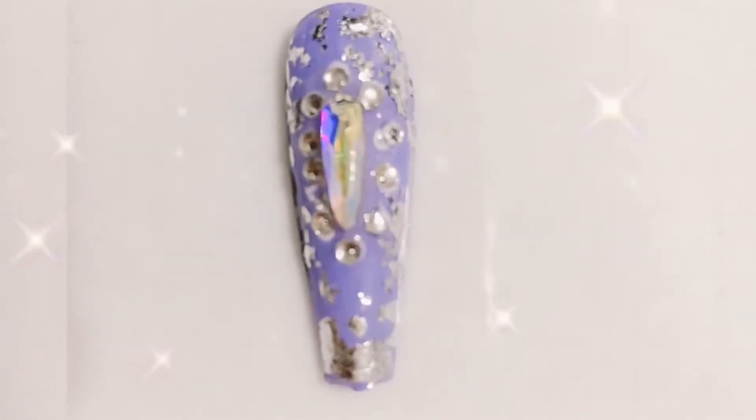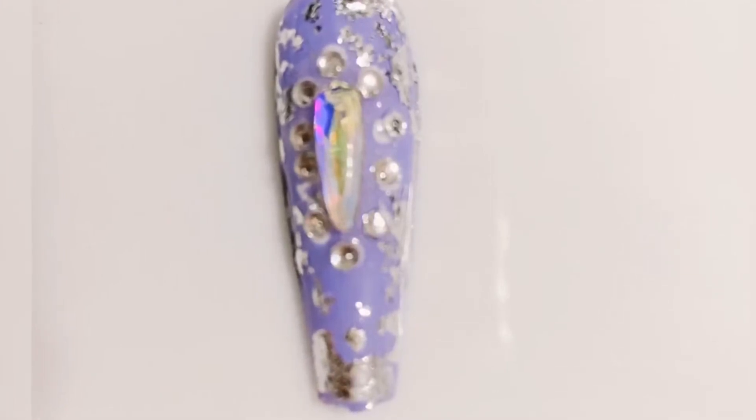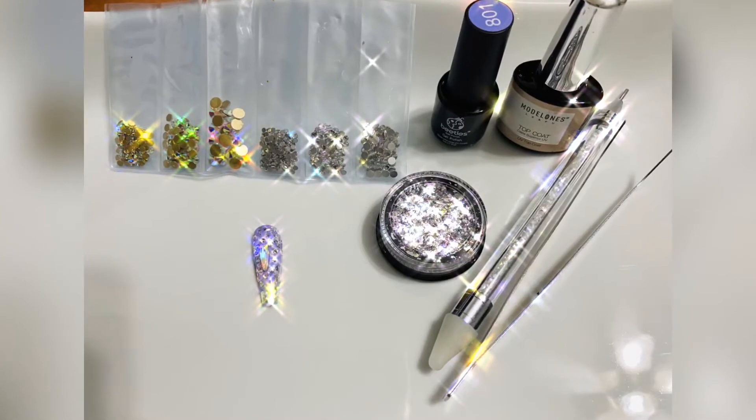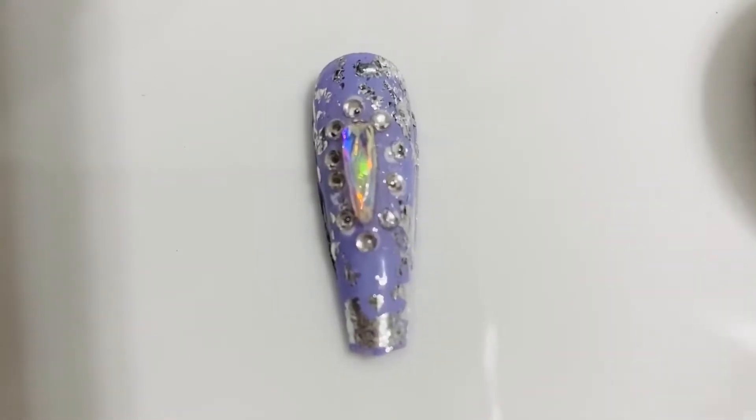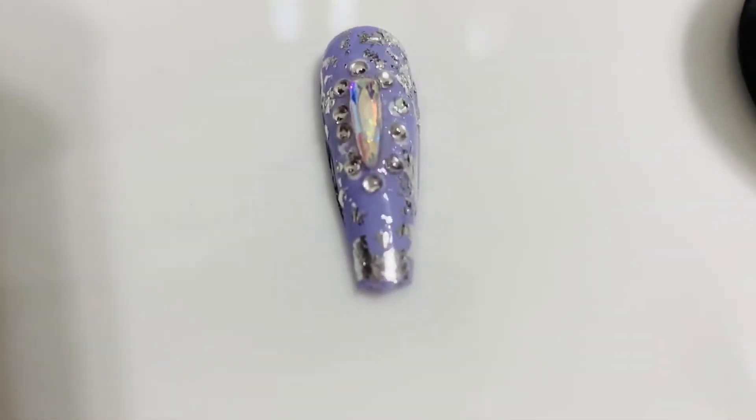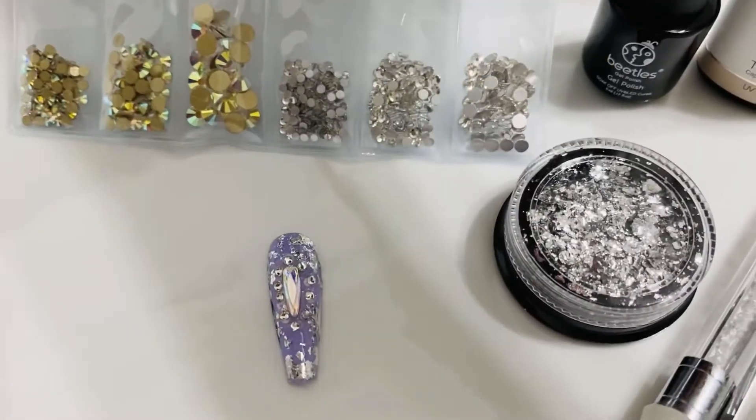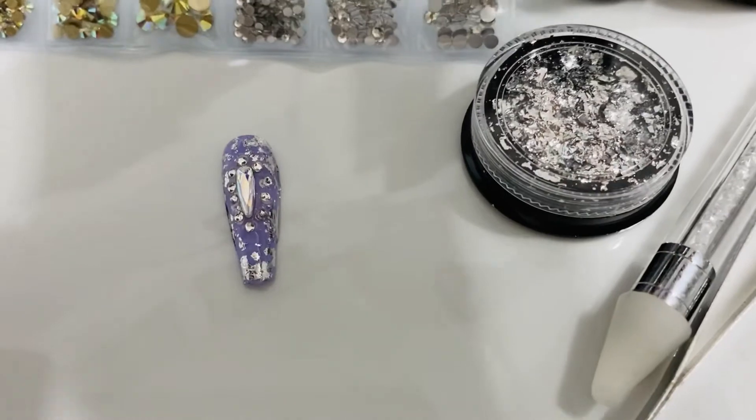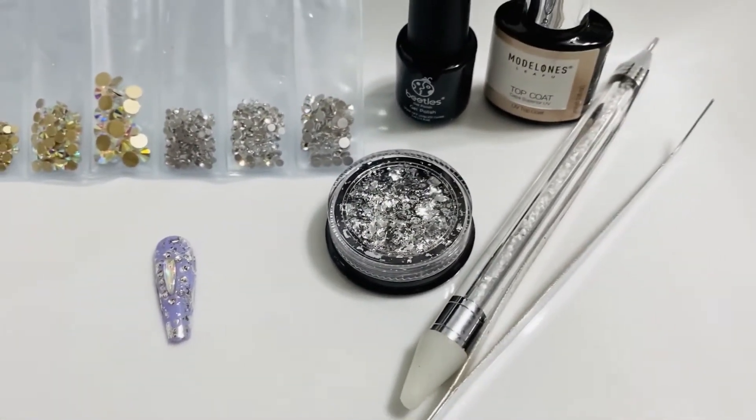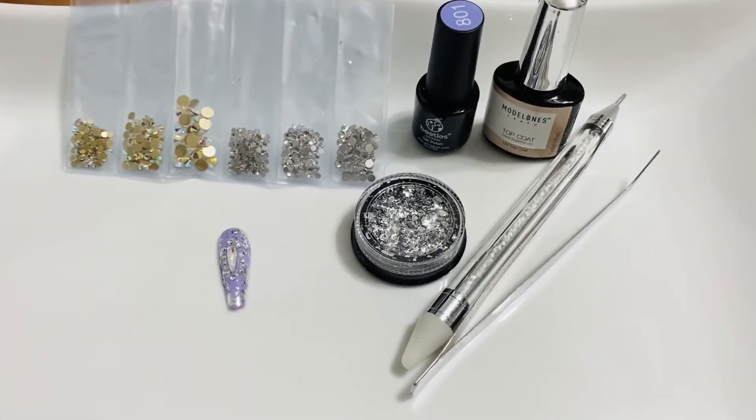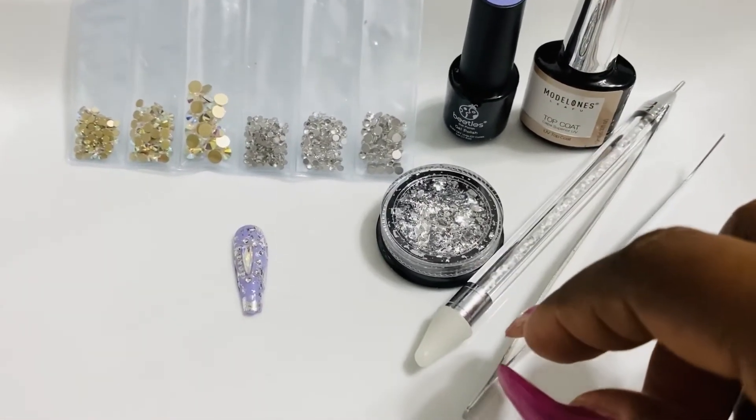Here is a nail that I did, it's purple with a little pizzazz of silver chrome to it. And here are the materials that I use to achieve this look. You'll see the aluminum foil right there, the rhinestones, and then the base color from Beatles, and Model One or Model Loan. I keep pronouncing the name incorrect, so correct me if I'm wrong and help me out.